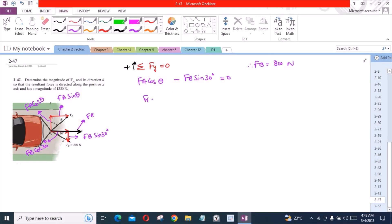So we have Fa cos theta equals 800 sine 30 degrees. Fa cos theta equals 400. Let's call this equation 1.